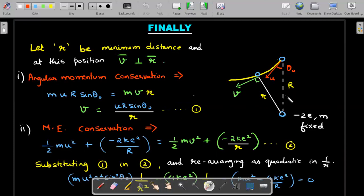Angular momentum conservation would be simply muR where capital R is the original distance and small r is the minimum distance. This would become mvr. Since r is the requirement, I'll write the value of the variable v in terms of r for my further use. This is equation number one.